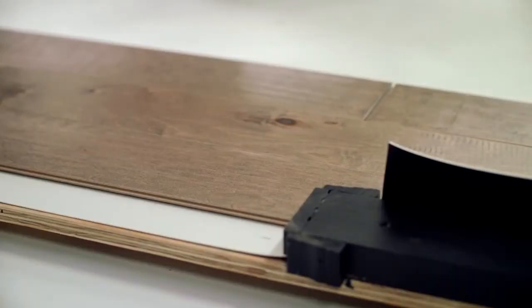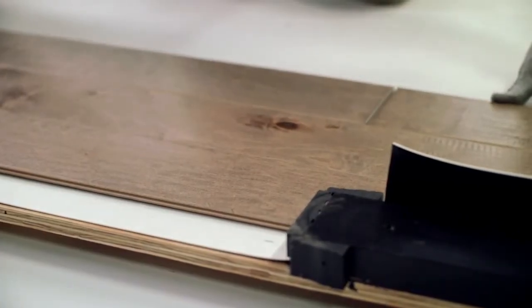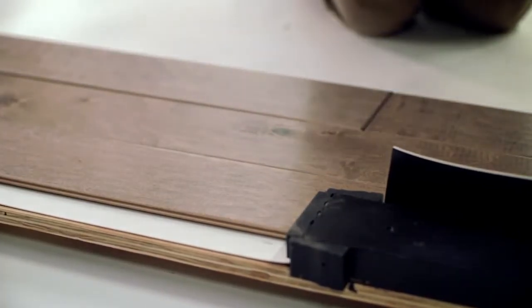All end joints should be separated by a minimum of 16 inches in your first four rows to create greater stability in these foundational rows. Check and make sure the end joints in these first two rows are staggered appropriately. If it looks good, then you're ready to start gluing.